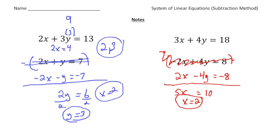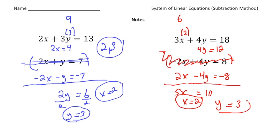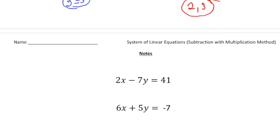To get the y value, I'm going to replace x with 2. So 3 times 2 gives 6, so it's 6 plus 4y equals 18. Take away 6 from both sides: 4y equals 12. Divide by 4 and we get y equals 3. So both of these systems actually have the same solution: x equals 2 and y equals 3.